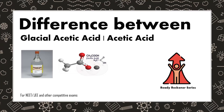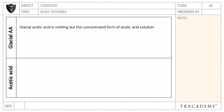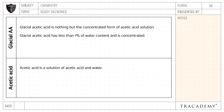In this video, let's understand the difference between glacial acetic acid and acetic acid. Glacial acetic acid is nothing but the concentrated form of acetic acid, whereas acetic acid is a solution of acetic acid dissolved in water. Glacial acetic acid has less than one percent water content and is much more concentrated.